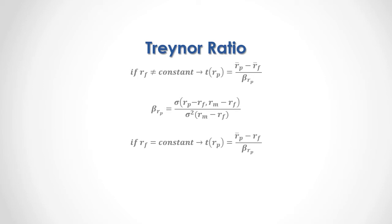On the other hand, if the risk-free rate of return is constant through time, then the Treynor Ratio equals: portfolio returns mean minus that constant risk-free rate of return, divided by the portfolio market beta calculated using the formula from the previous slide. And last, if for simplicity purposes we assume a 0% risk-free rate, then the Treynor Ratio equals the portfolio returns mean divided by the portfolio market beta.